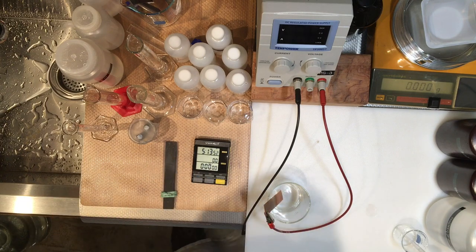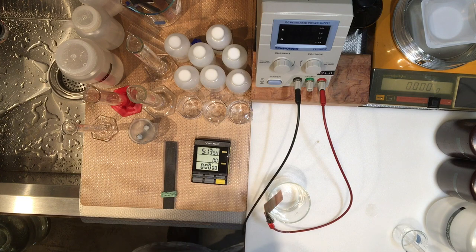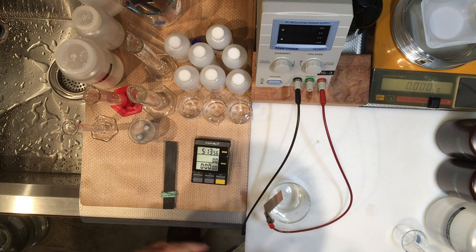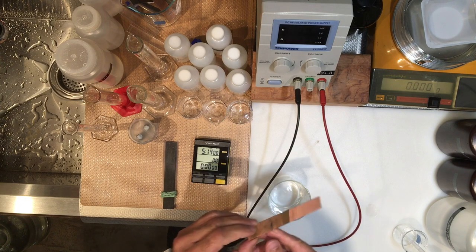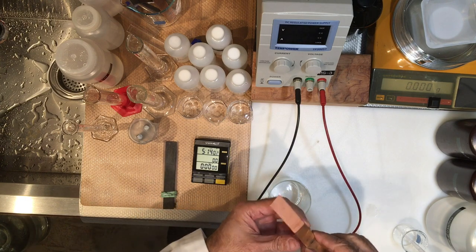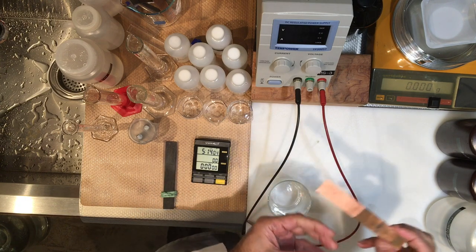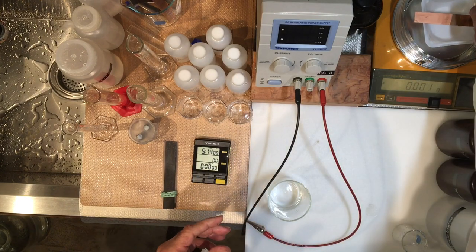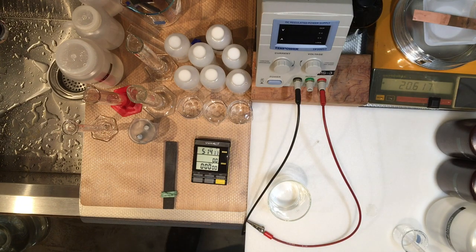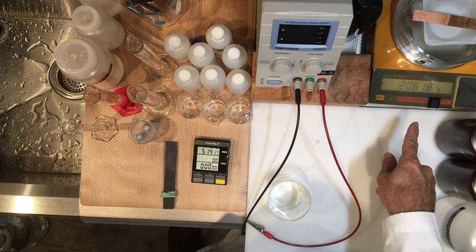So the data that I would like for you to record is the first one would be the mass of the copper. So let's record the mass of the copper. This is the electrode that I'm going to use to generate copper ions in the solution. The balance is already zeroed out, so the mass of this is 20.617 grams. Please record that.